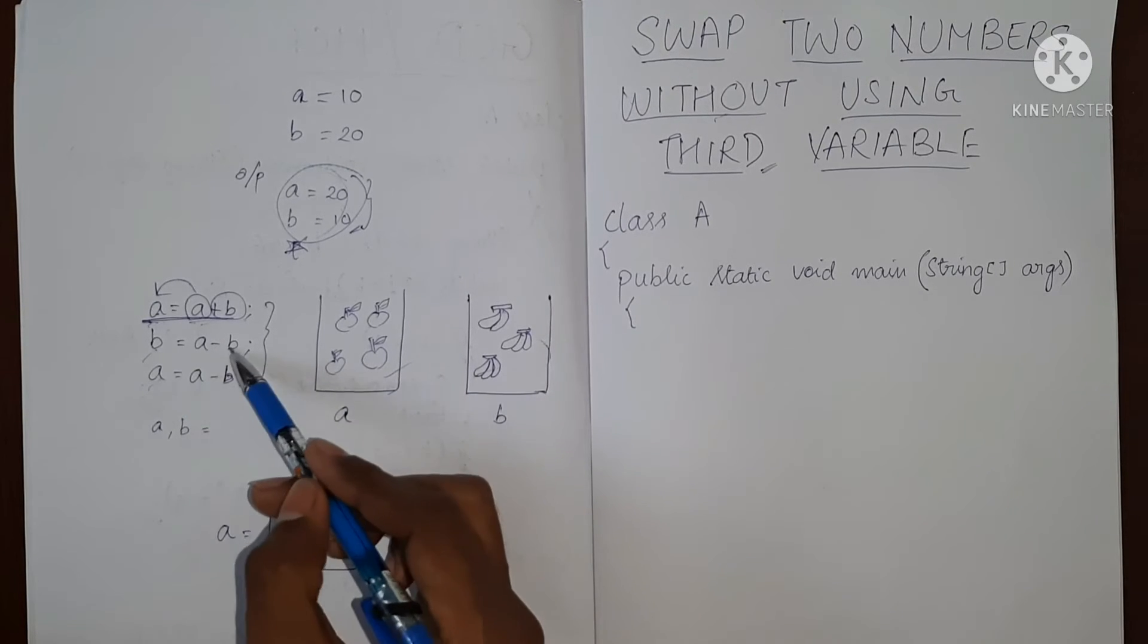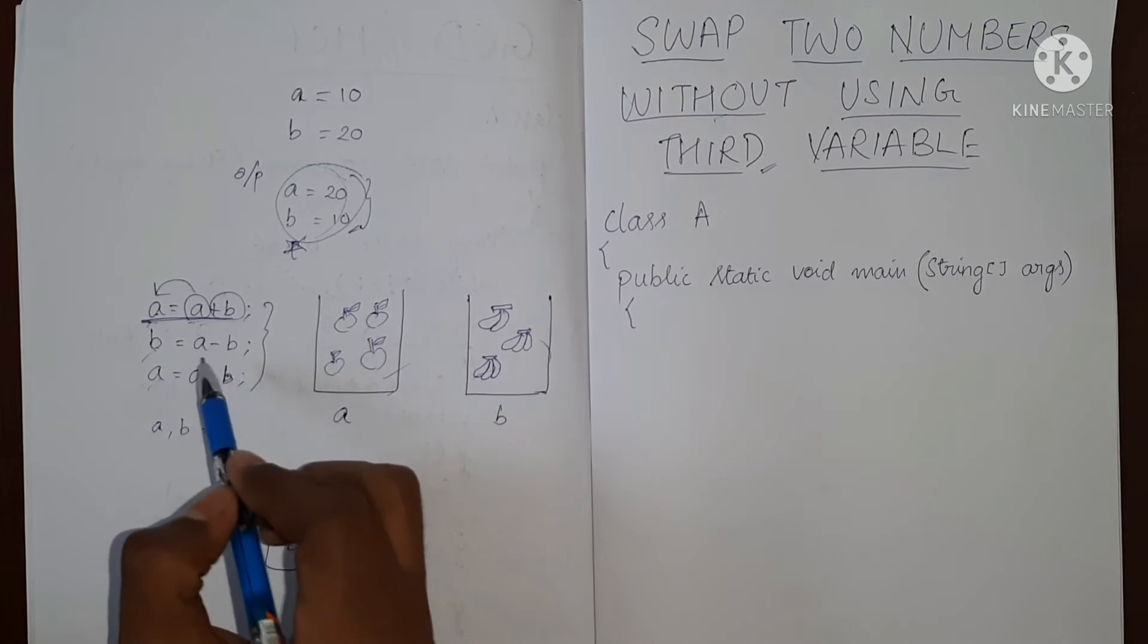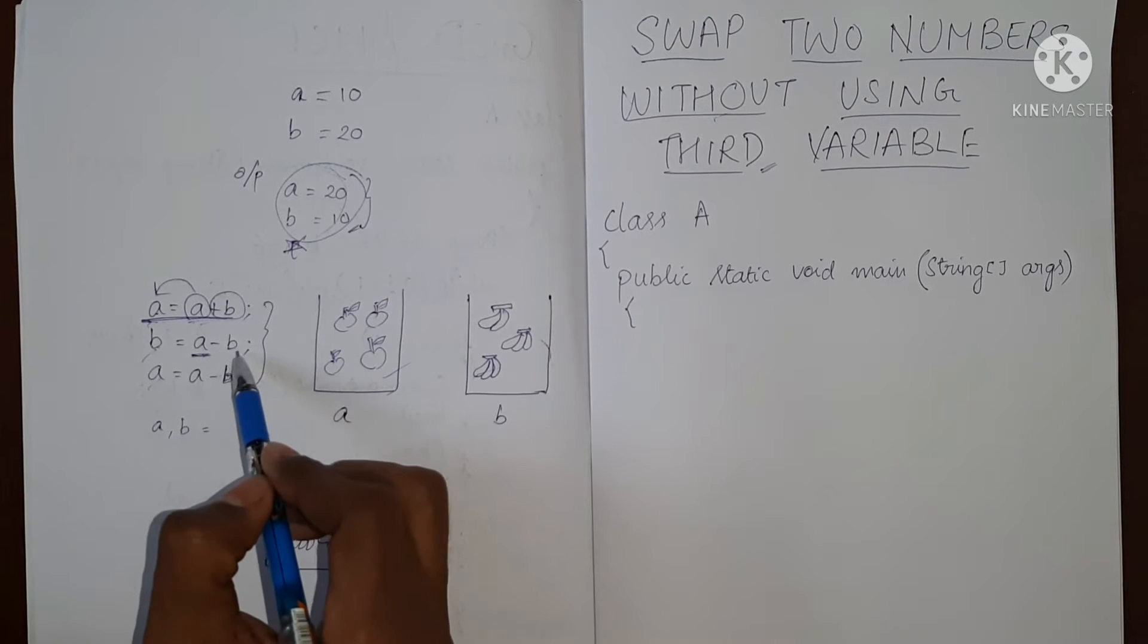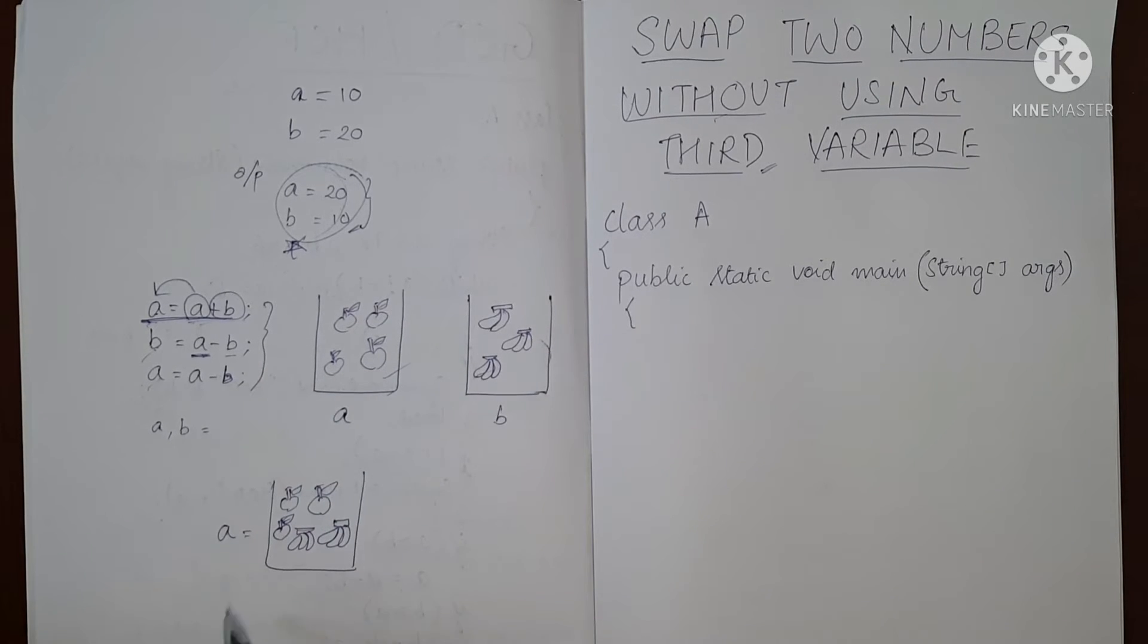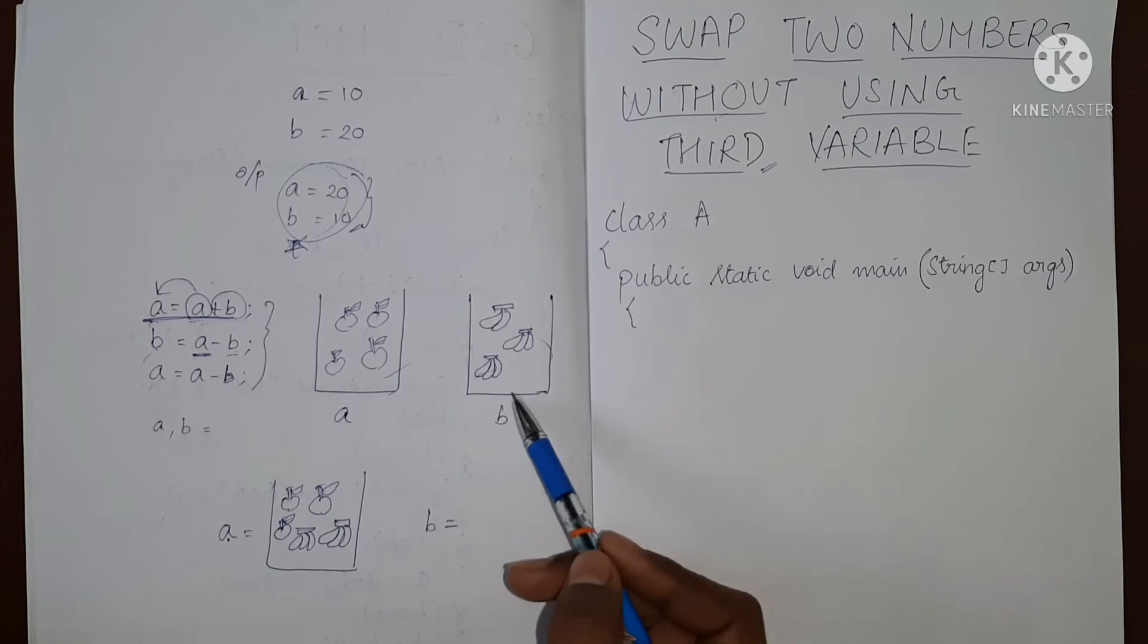Now what we did, we did b equal to a minus b. So we are creating b and in that b, a is now a mixture of both apples and bananas. From this mixture, we are going to remove b. So now our b will be a minus b. This is our a, this is our b.